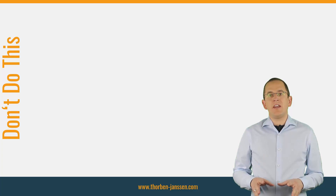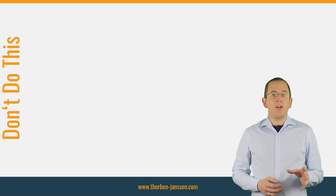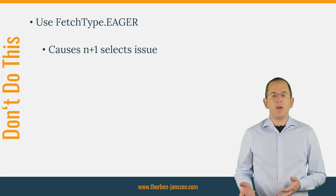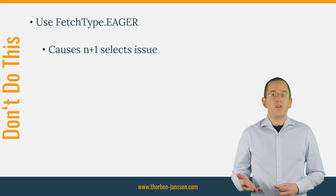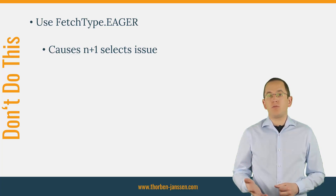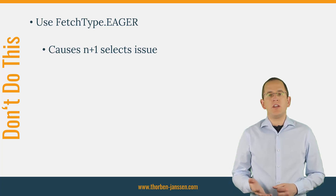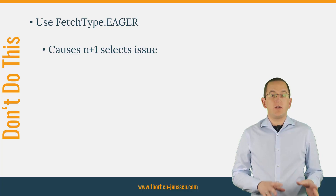You can find lots of bad advice on how to fix the lazy initialization exception. Let me quickly explain which suggestions you should ignore. Some developers suggest changing the fetch type of the association to eager. This, of course, fixes the lazy initialization exception, but it introduces performance problems that will show up in production. When you set the fetch type to eager, Hibernate will always fetch the association, even if you don't use it in your use case. That obviously causes an overhead that slows down your application.